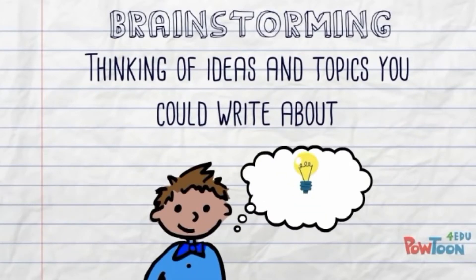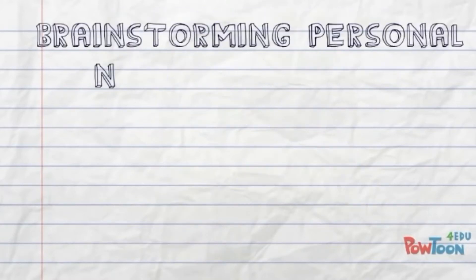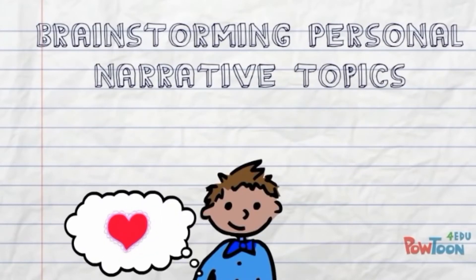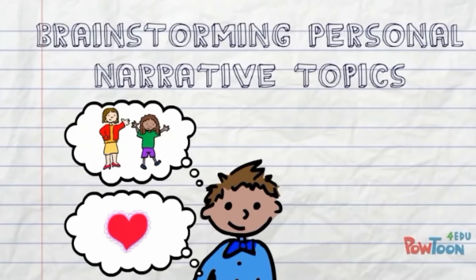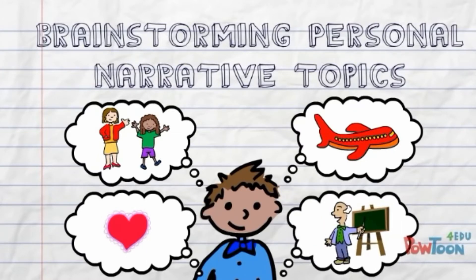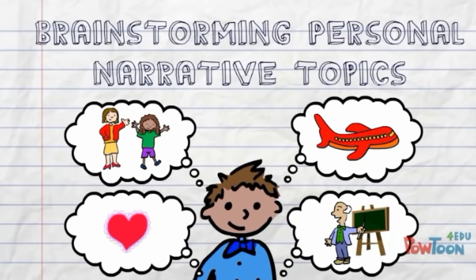Brainstorming helps us find the best possible topic for our writing. When you brainstorm personal narrative topics, you can think about good memories you have, things that have happened to you, fun things you've done with your family or friends, trips you have taken, special places you have visited, activities you have done at school, or anything else that has happened to you in your life.